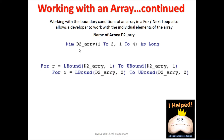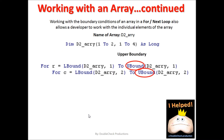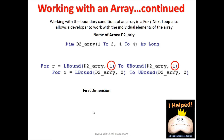Here we have our array — it's a 2x4 array. Down here we have the different boundaries we want to reference. Here are the lower boundaries for both dimensions of this array, and here are the upper boundaries for the same array. We want to reference the boundaries for each dimension. Notice the notation: here's the first dimension's lower and upper boundaries, and here's the second dimension of the same array.